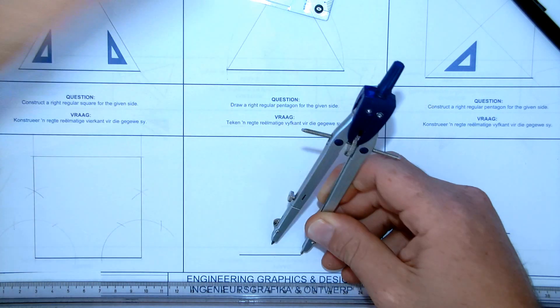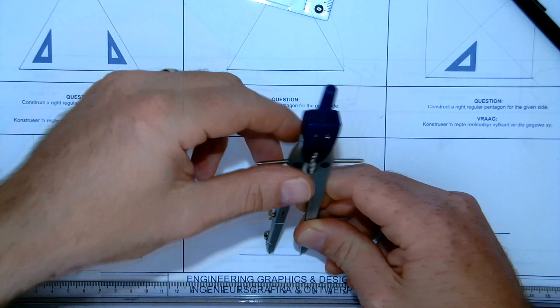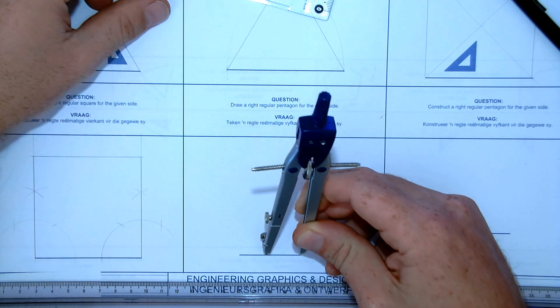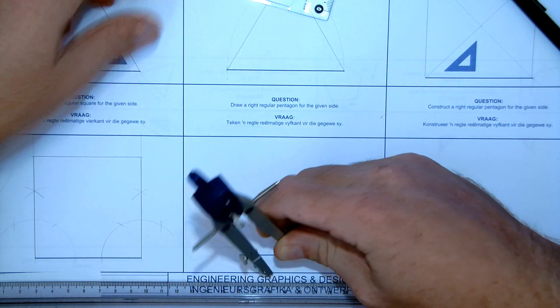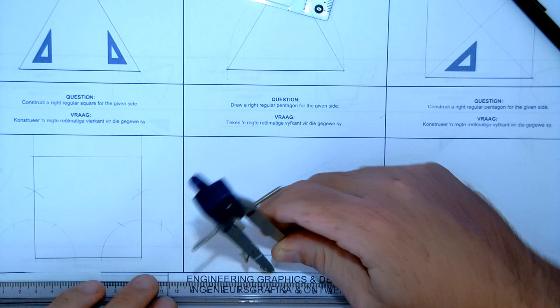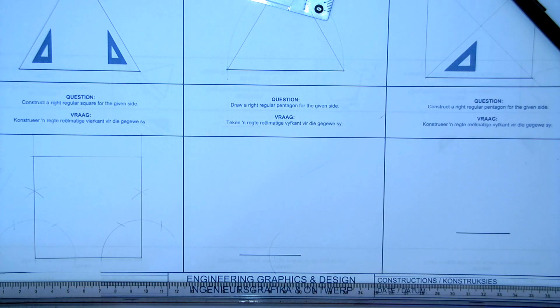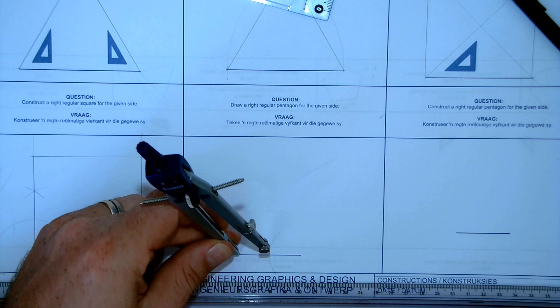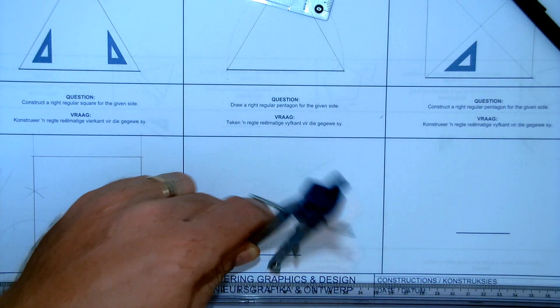Now, perpendicular line. I am going to take my existing line, I am going to set my compass again just a little bit further than half and I am going to draw an arc. I am going to do the same from the other side.